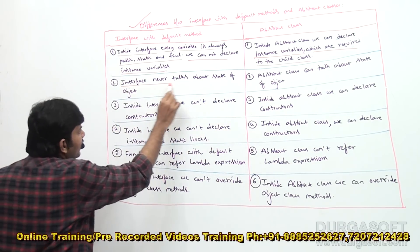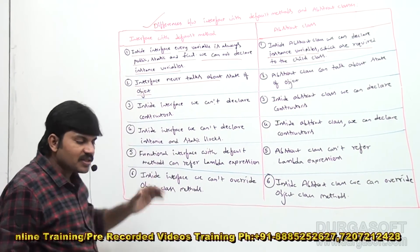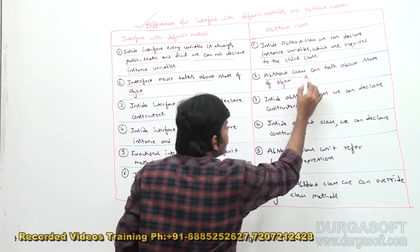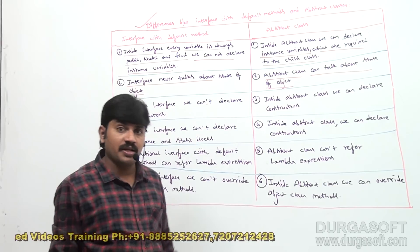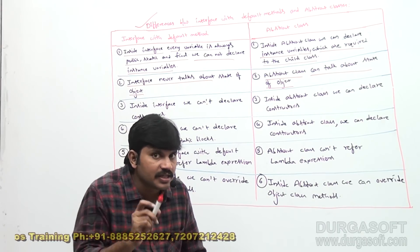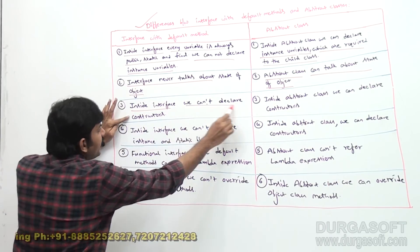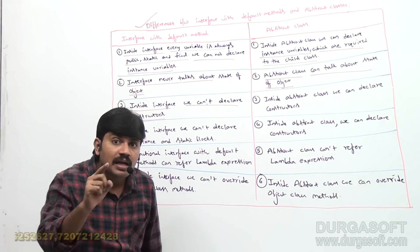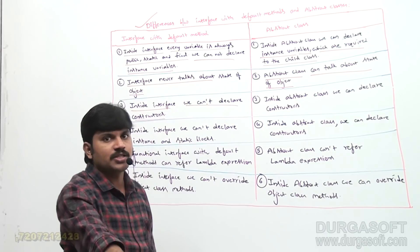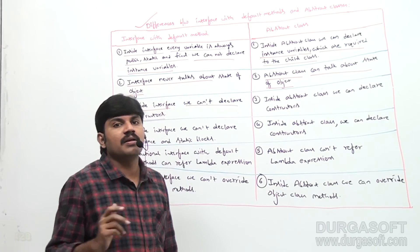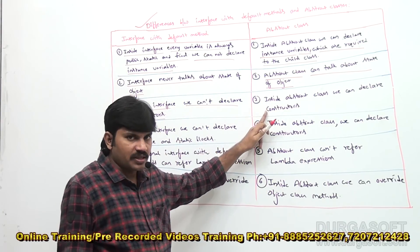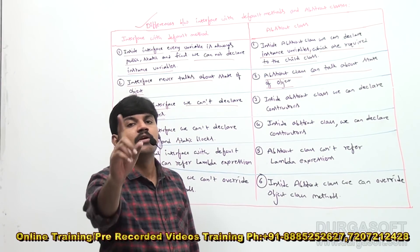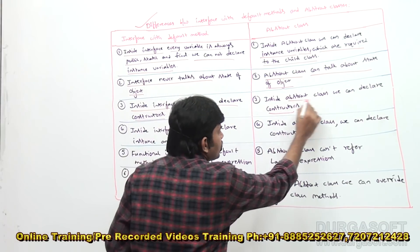An interface never talks about the state of an object because it only contains static variables — no instance variables. But an abstract class can talk about the state of an object since it can contain instance variables. Next, inside an interface we can't declare a constructor — because the purpose of a constructor is to initialize instance variables, and inside an interface there are no instance variables. But inside an abstract class, constructors are applicable.